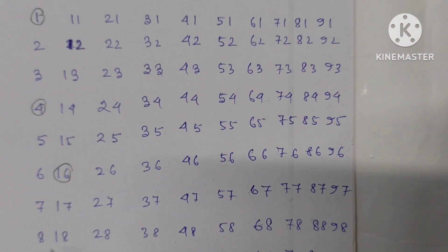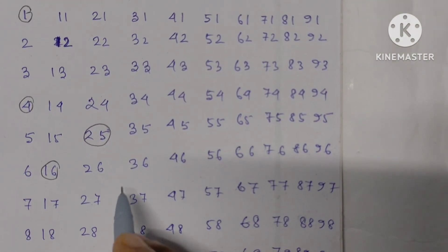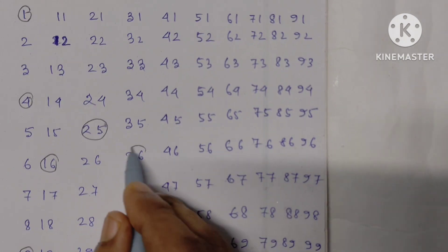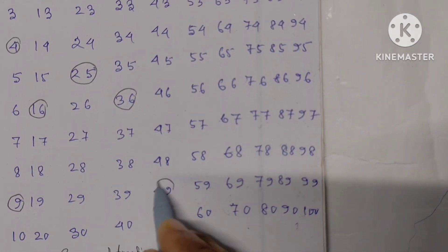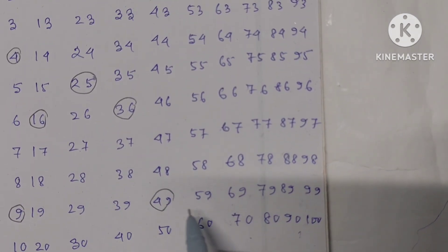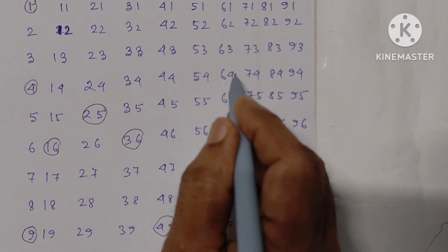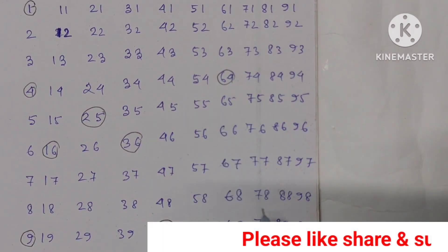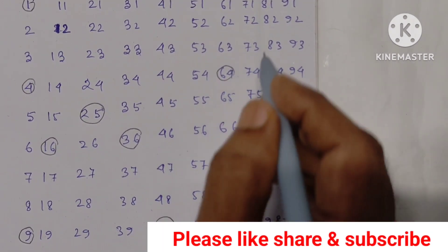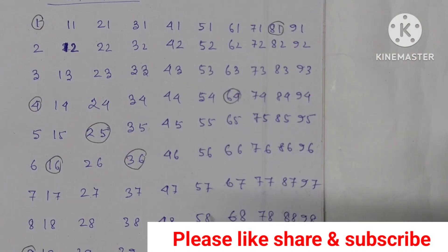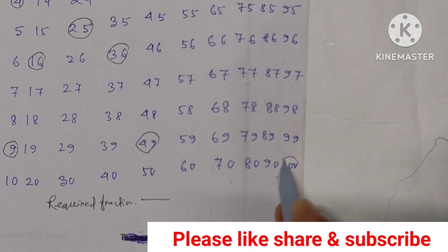The perfect squares from 1 to 100 are: 1, 4, 9, 16, 25, 36, 49, 64, 81, 100 — that is 10 perfect square numbers. So the required fraction is 10 by 100.